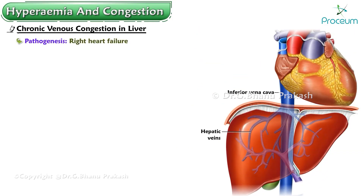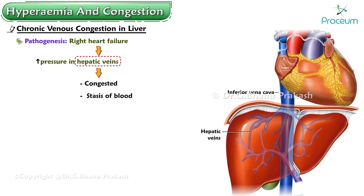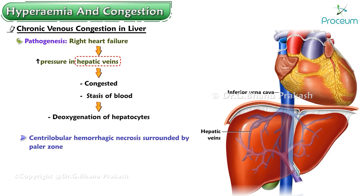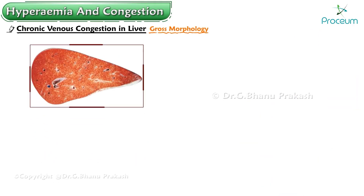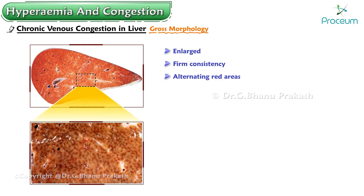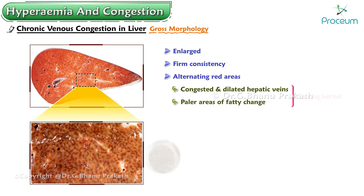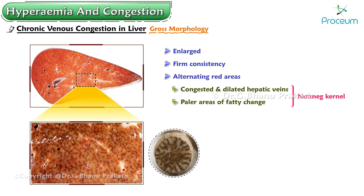Due to right heart failure, there is increased pressure in the hepatic veins. Congestion and stasis cause deoxygenation of hepatocytes. Central lobular hemorrhagic necrosis occurs, surrounded by a paler zone of hepatocytes with fatty change, adjacent to which normal unaffected hepatocytes are better oxygenated near the hepatic arterioles. Cut section shows alternating red congested areas and paler areas of fatty change giving the nutmeg kernel appearance.